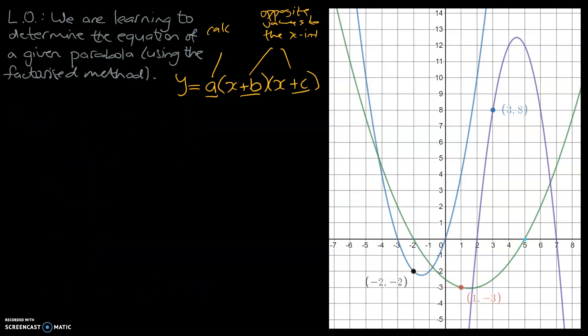Graph number 3 is the purple one. We're going to start off the same way — write down the formula to help us. Just because it's upside down doesn't mean our process changes. It's a parabola, it's the same process. The only thing that will be different is when we calculate a, we are expecting a negative number because it is upside down.